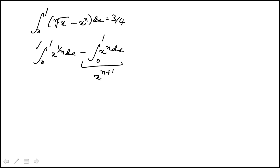This would be x to the n plus 1 over n plus 1, and I have to evaluate it at 1 and 0. This would be x to the 1 over n plus 1 over 1 over n plus 1, again 0 and 1.